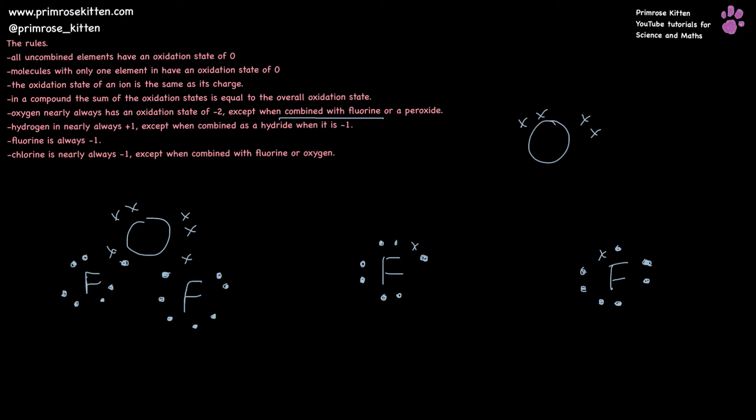Now oxygen has lost electrons in this case. It has lost two electrons, meaning it is going to be the one that has the plus two oxidation state. Fluorine has gained one electron and there are two of them, so that is going to be a minus two oxidation state coming from the fluorine there.